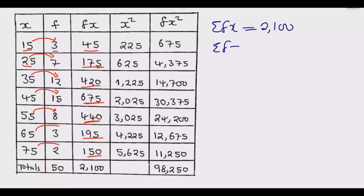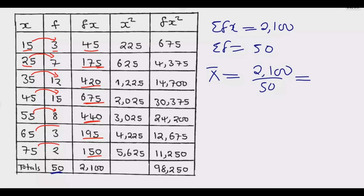The sum of frequencies is 50, so we can now find the mean: mean = 2100 ÷ 50 = 42. So the mean is 42. With this we are closer to getting the six marks.